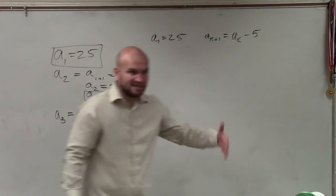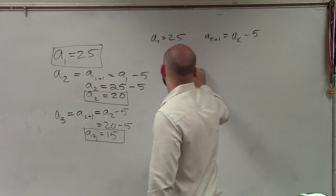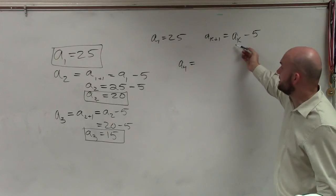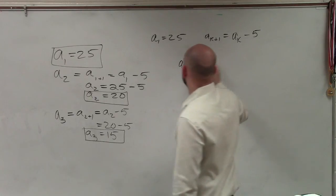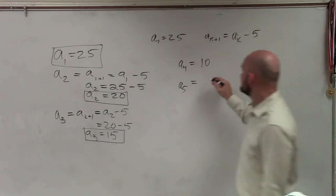You guys kind of see the process we're doing. Right? So if I want to get a little lazy, I just know I'm going to plug in my value of a sub 3 right here, which is 15. 15 minus 5 is 10. And a sub 5. Plug 10. 10 minus 5 is 5.